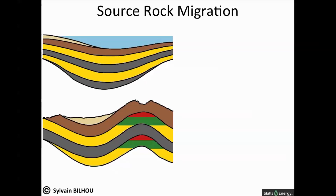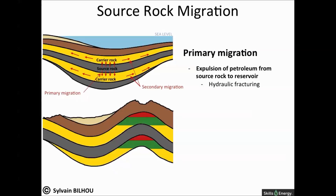The transformation of solid kerogen into liquid and gas is associated with an increase of the molecular volume. When the pore pressure exceeds the mechanical strength of the rock, microfractures are generated — this is hydraulic fracturing. Oil and gas will escape through these microfractures and circulate. This is the primary migration.